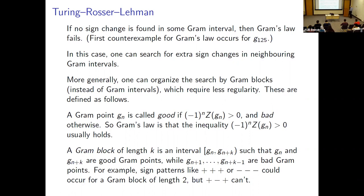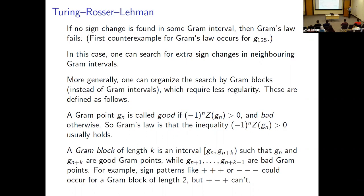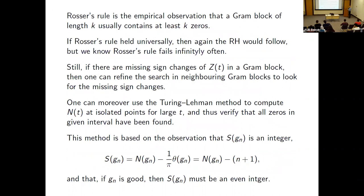You can search by gram blocks: if sign changes are missing, look at neighboring gram blocks rather than gram intervals. Rasser noticed that a gram block of length k usually contains at least k zeros. Again this would imply the Riemann hypothesis if it held universally, but it fails infinitely often by the same Selberg result that S(t) is unbounded.